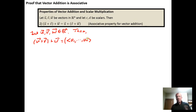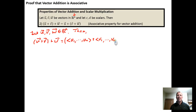An important note: a problem I've been seeing in some homeworks is using a vector specific to R2, a two-component vector, or a two-by-two matrix. When you're proving for the general case, you have to use an n-component vector. So we write (u sub 1, ..., u sub n) plus (v sub 1, ..., v sub n) plus (w sub 1, ..., w sub n).